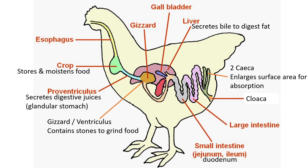The picture makes the next stomach compartment look very small, but the proventriculus can actually expand depending on the amount of food inside. Its main function is to secrete digestive juices, similar to our stomachs in humans. It's also known as the glandular stomach because glands are present which secrete those digestive juices.